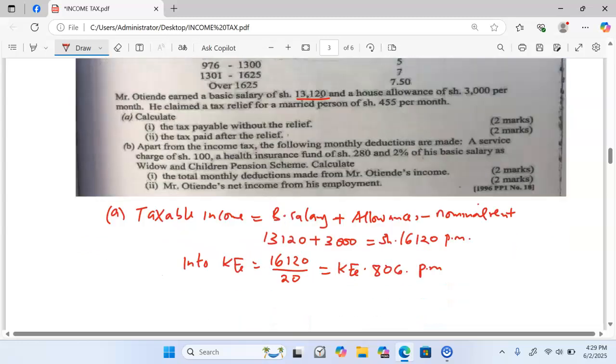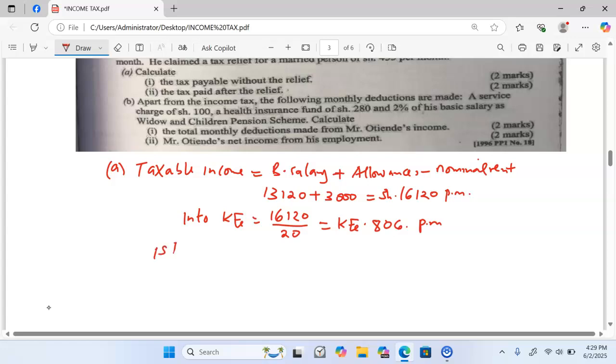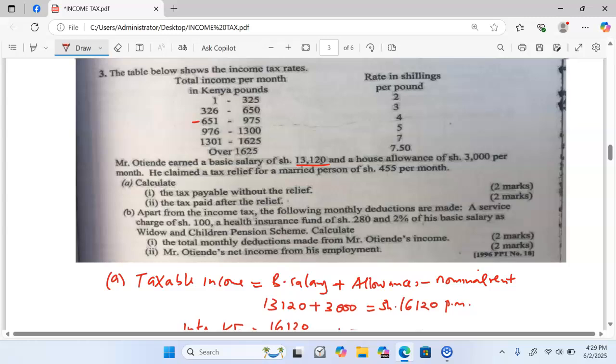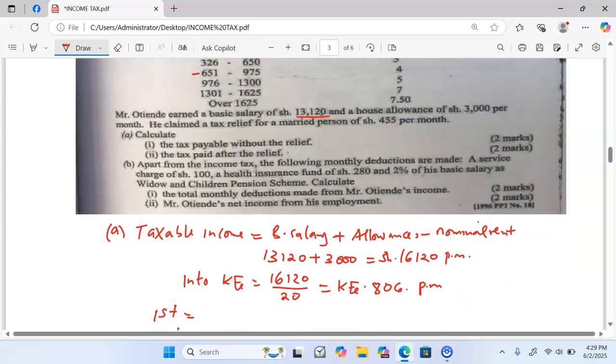Third means we are going to tax this amount three times. Simply have your first bracket here, have your second bracket and lastly the third bracket. In the first bracket, we usually take the maximum, which is 325.